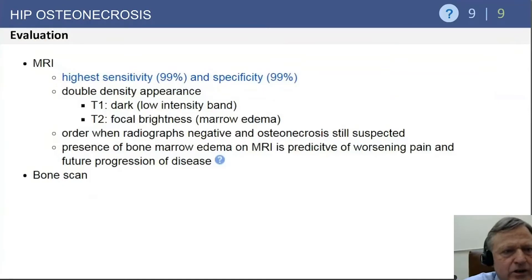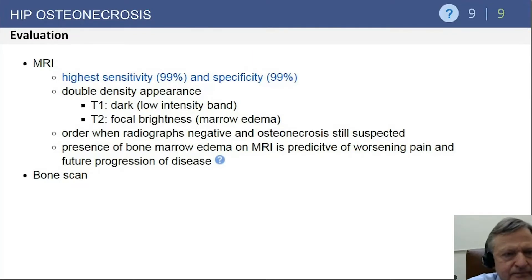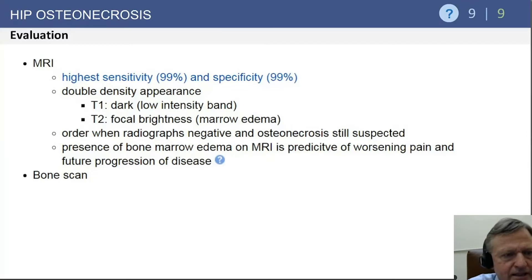MRI has the highest accuracy, sensitivity, and specificity for diagnosing AVN. Importantly, the presence of bone marrow edema on MRI is highly predictive of worsening pain and disease progression — making it an ominous sign on examination.